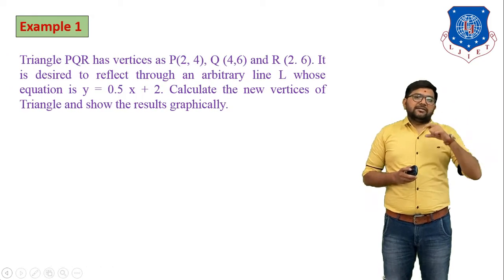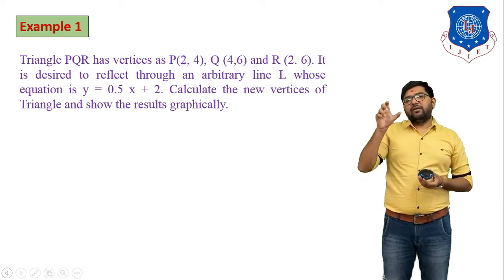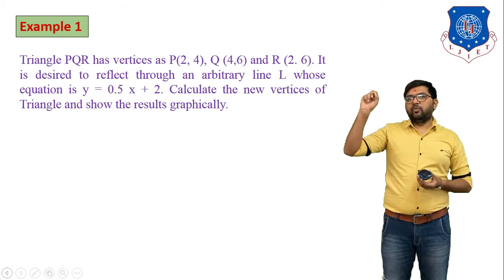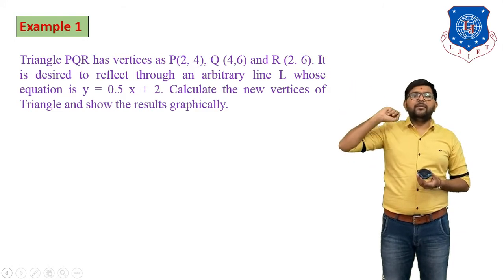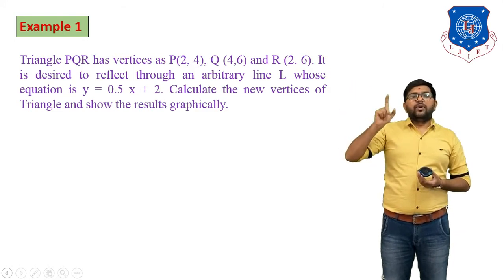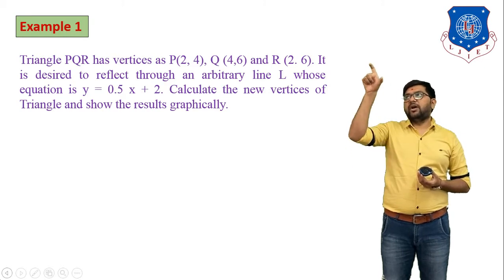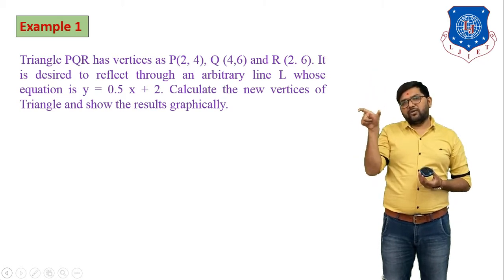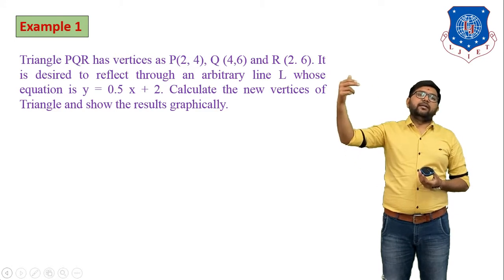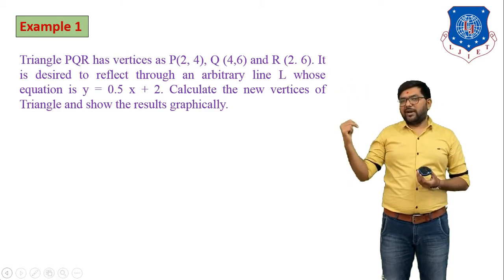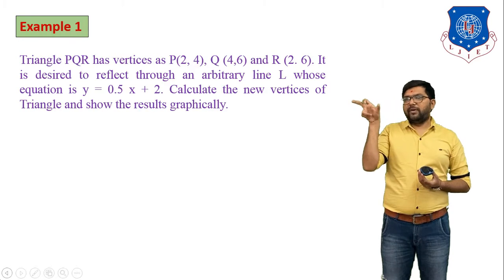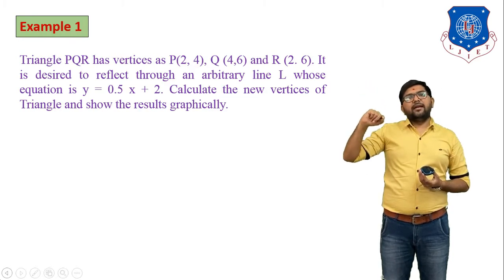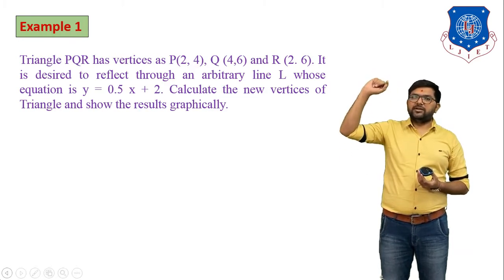The first process is translation. Suppose you have an equation like y = 2x + 3; you first do the geometric transformation that is translation — move the straight line to the origin. After that, do a clockwise rotation, then find the mirror image about the x-axis, then do an anticlockwise rotation, and the last step is inverse translation.